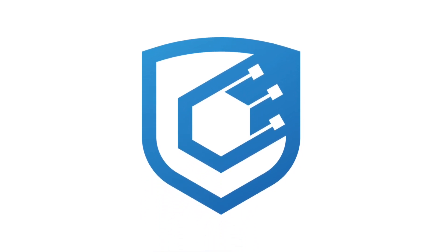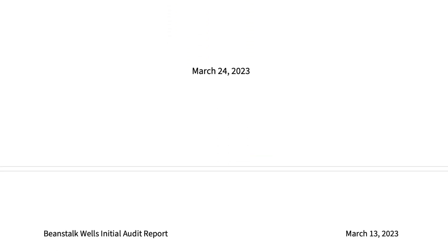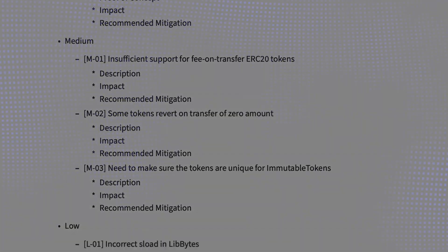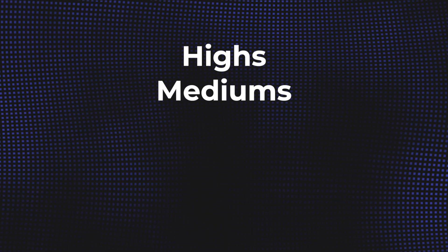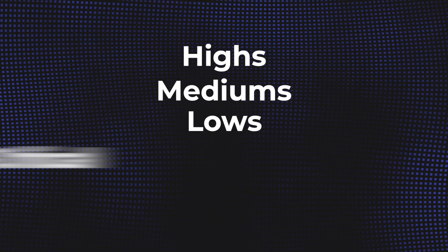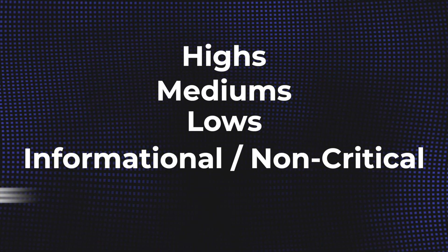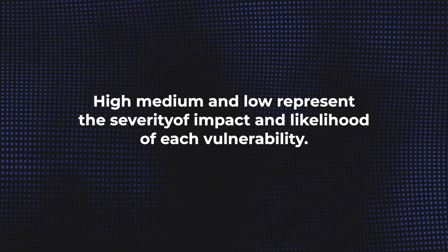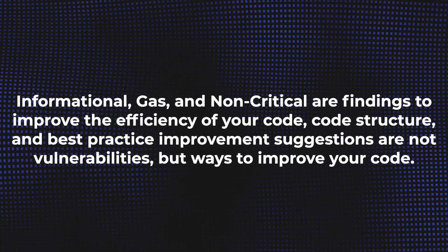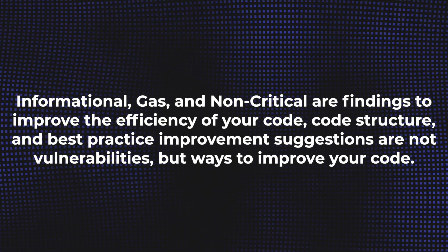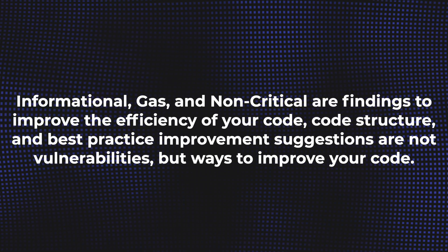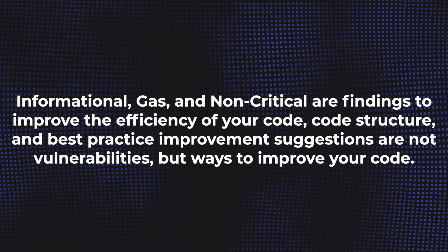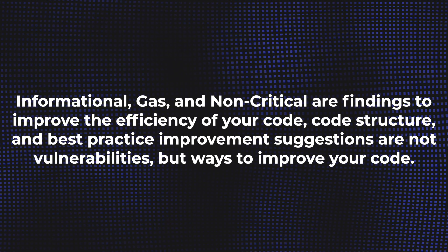Initial report: after the time period ends, the auditors will give you an initial report with all their findings listed by severity, usually categorized into highs, mediums, lows, informational/non-critical, and gas efficiencies. High, medium, and low represent the severity of impact and likelihood of each vulnerability. Informational, gas, and non-critical findings are ways to improve the efficiency of your code, code structure, readability, and best practices — not necessarily vulnerabilities, but more ways to improve your code.